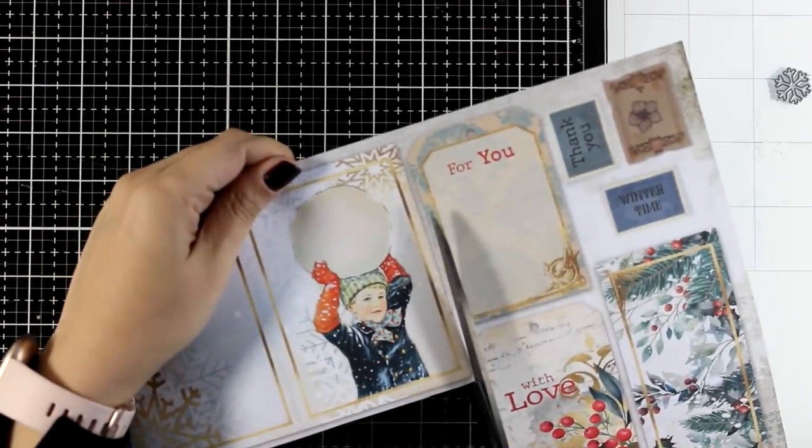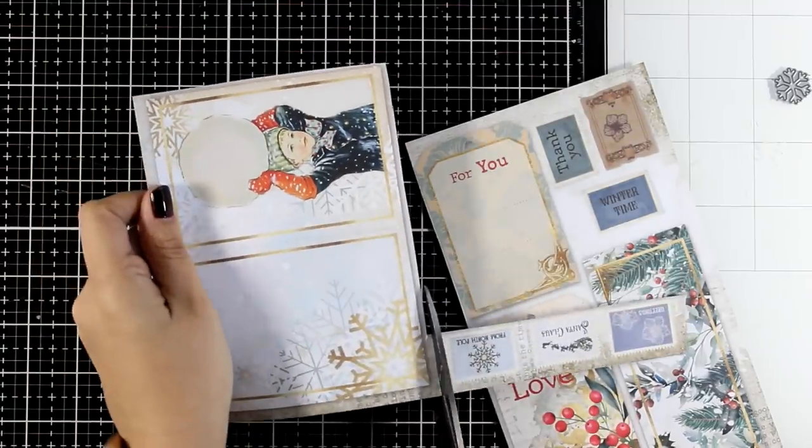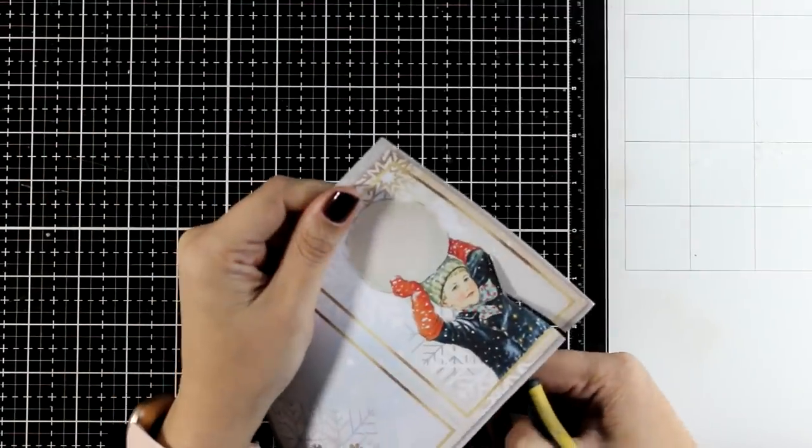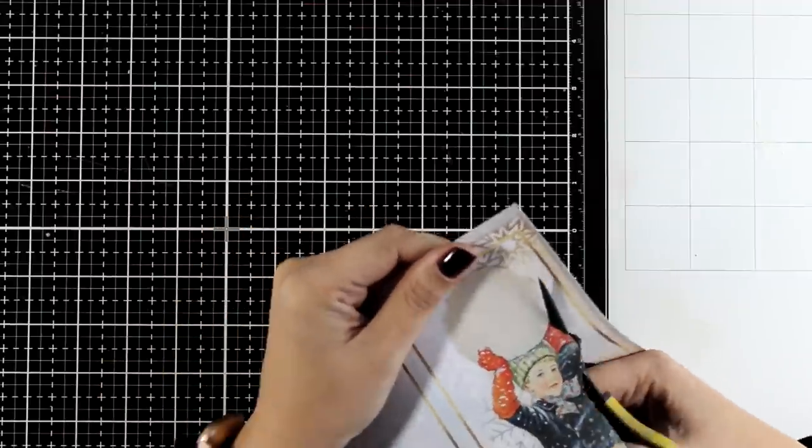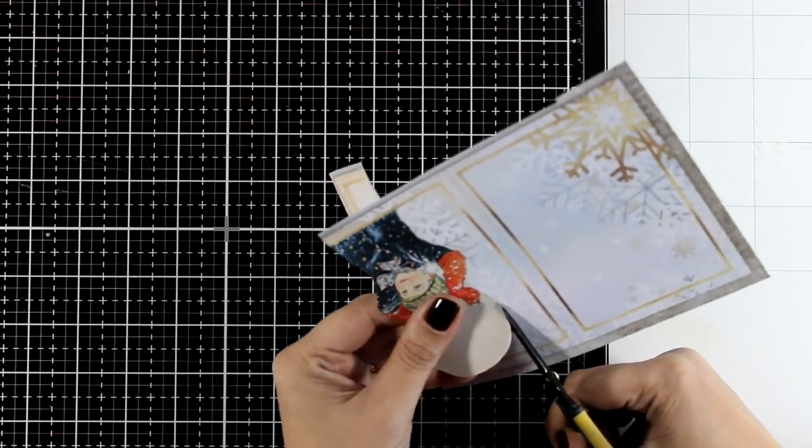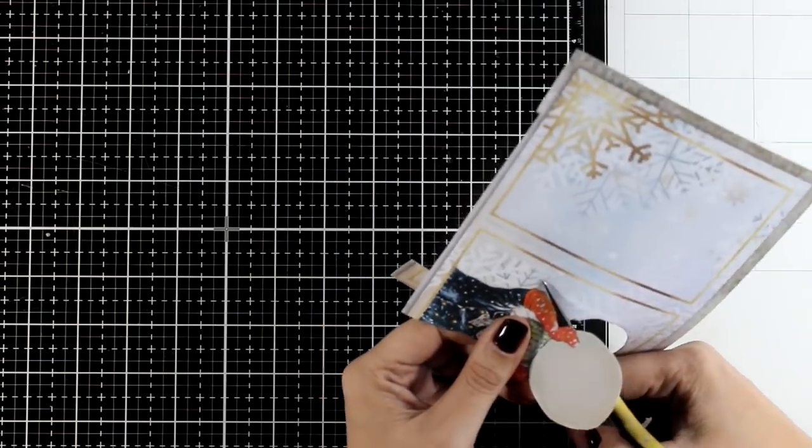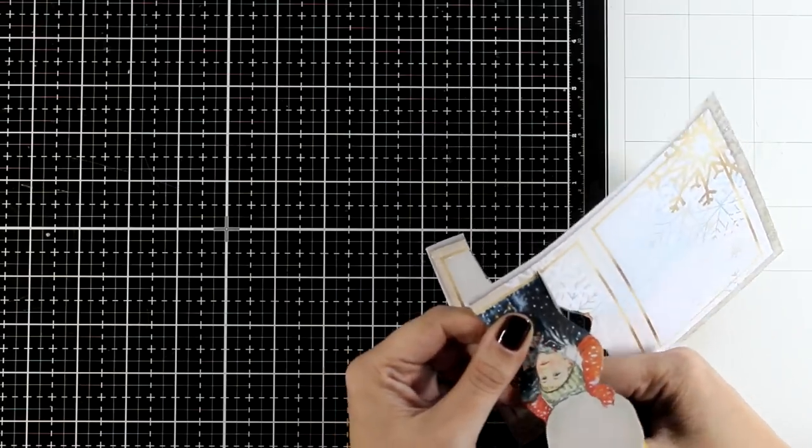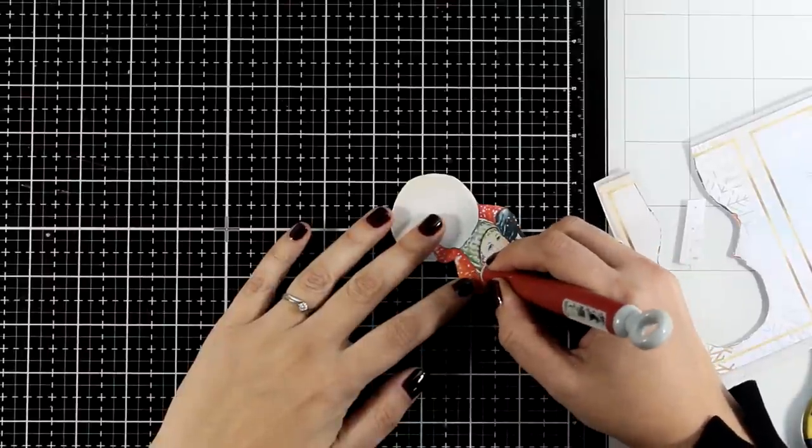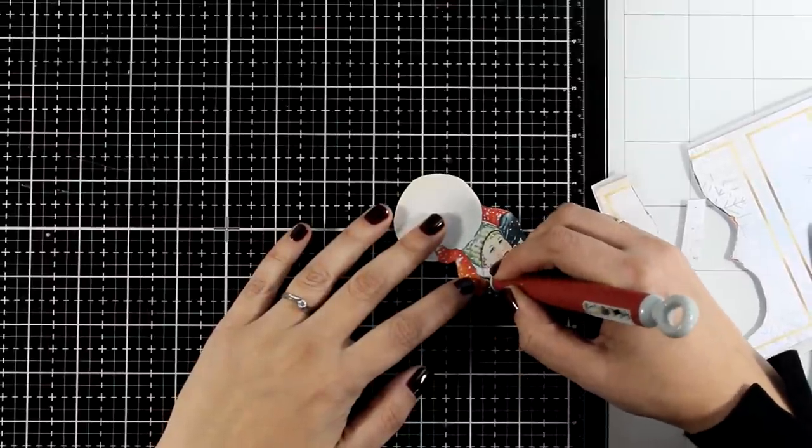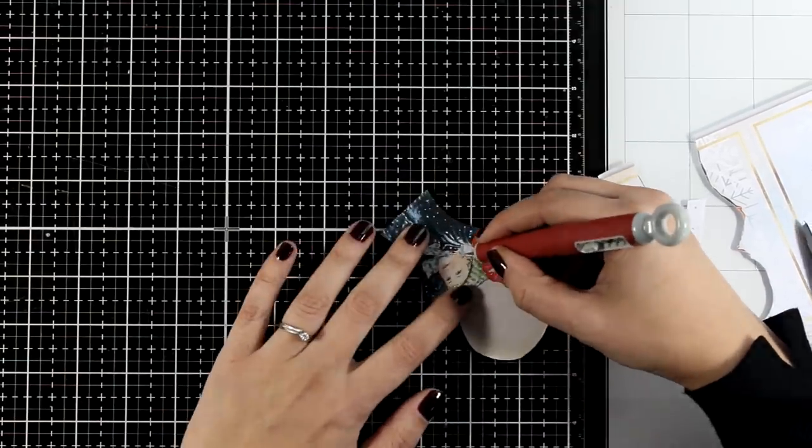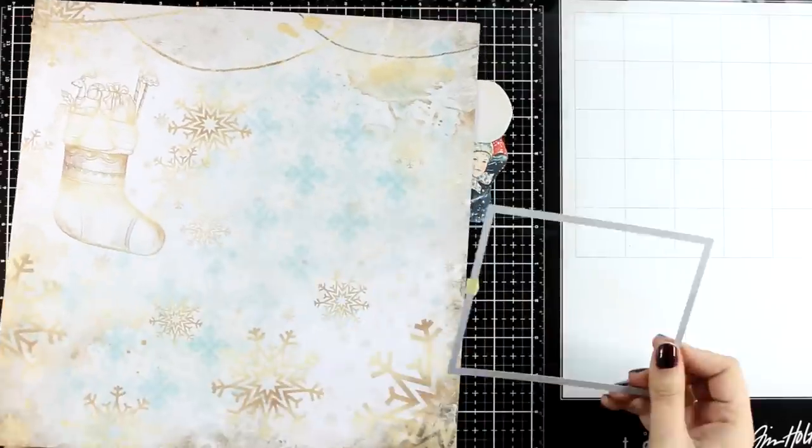Moving on to the second card. This time I'm using this boy with the snowball as my focal point. One thing you can do is use this as a tag directly on top of a card. However, I feel like this one is shouting to cut it out. So I'm going to cut around him—he's really easy to fuzzy cut so I can pop him on top of my card to add dimension. When I do fuzzy cutting, little details like this can drive me crazy. I'm using my craft knife to cut out that white space between his head and the arm.